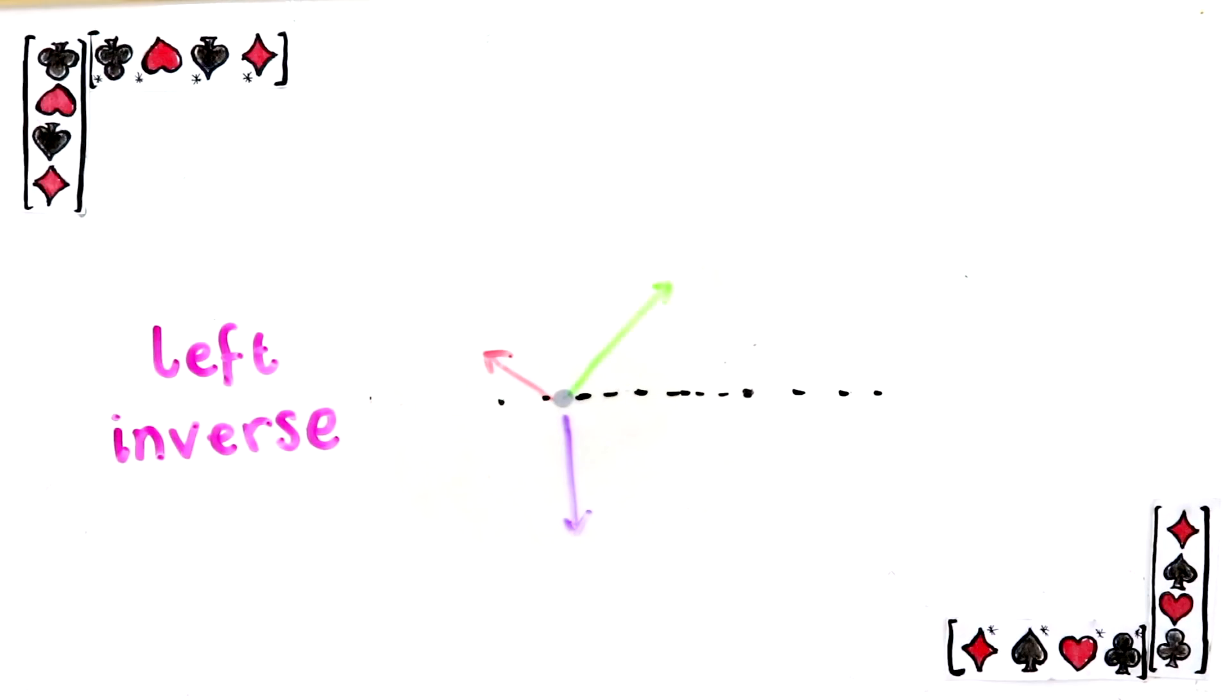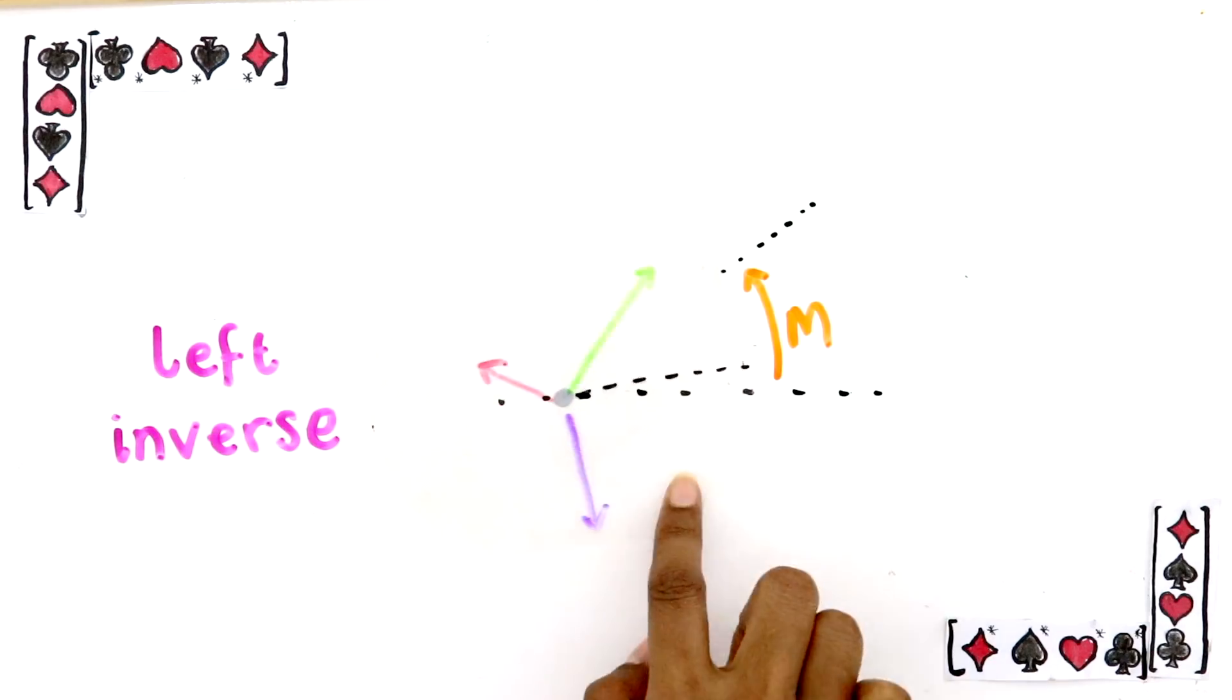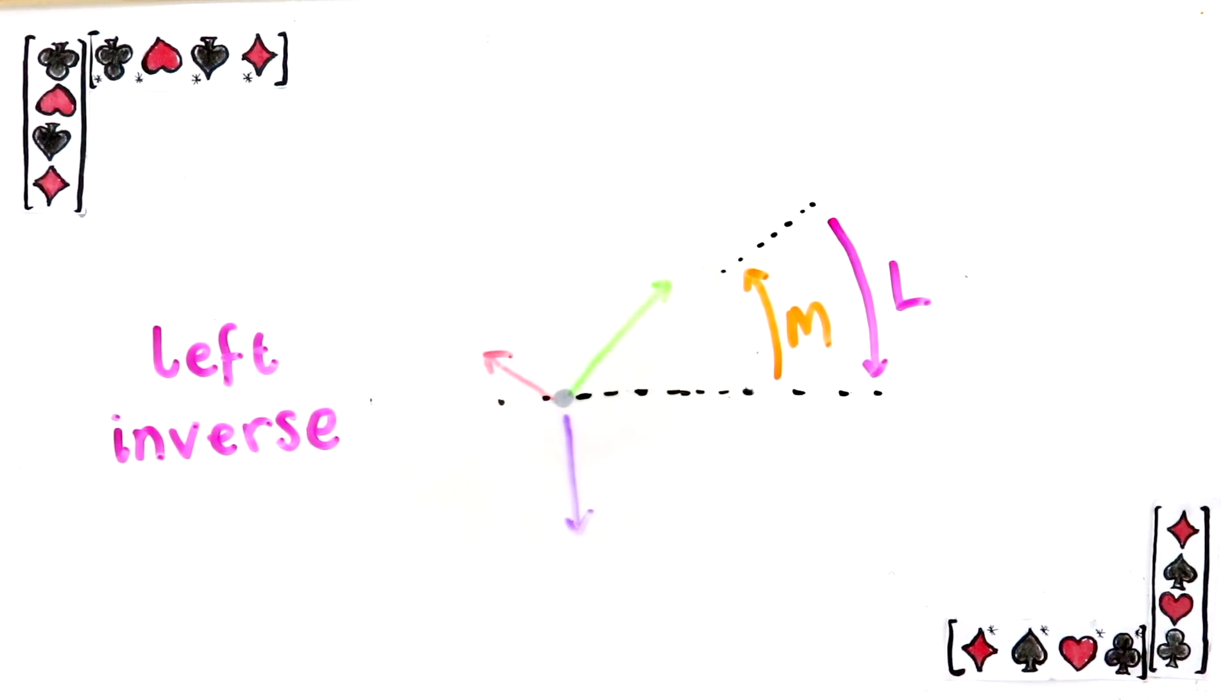Imagine you have a bunch of vectors in some vector space, in this case 2D, and you apply some matrix M on them. Here it rotates them. Then you think you'd like to have undone what you just did and get the vectors back to where they were. In this example, what transform undoes the rotation? You just rotate everything back by the same angle, right?